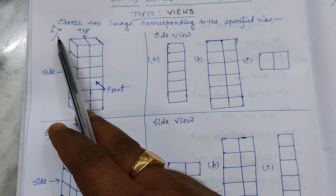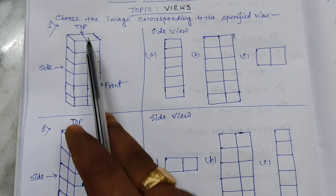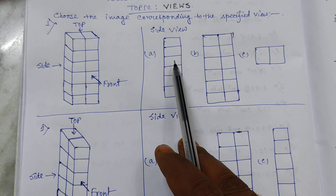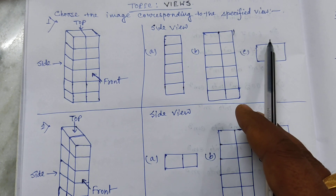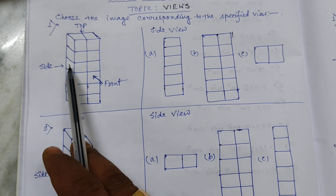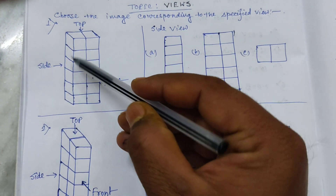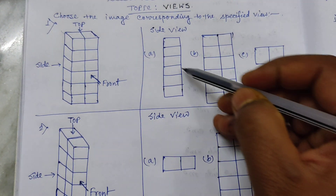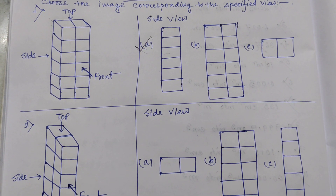Now you can see here number one — this is the image of a three-dimensional object. It shows the top view, side view, and front view. Three options are given and we have to find the side view. If I look at the object from this side, we can see only this part. So Option A is the correct option.